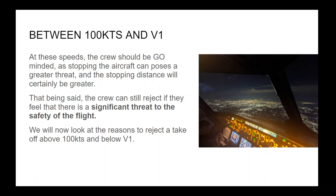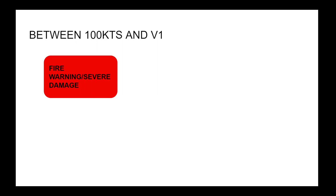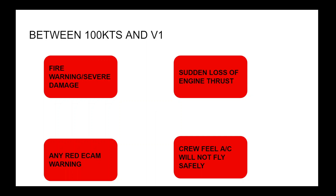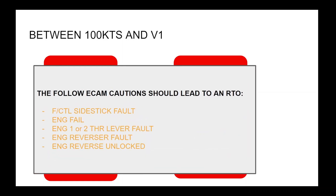We will now look at the reasons to reject a takeoff above 100 knots and below V1. Typical reasons include, but are not limited to: fire warning or severe damage, sudden loss of thrust, any red ECAM warnings, or if the crew feel the aircraft will not fly safely. There are also some ECAM cautions that can still appear on the takeoff roll — should they appear, an RTO should be performed. These are: flight control side stick fault, engine failure, engine 1 or 2 thrust lever fault, engine reverser fault, and engine reverse unlocked.